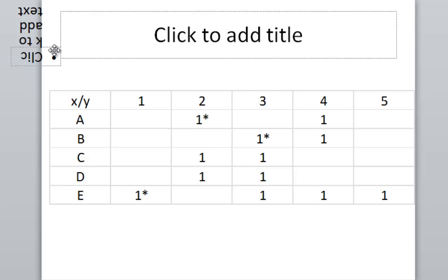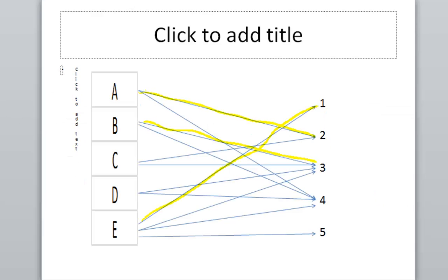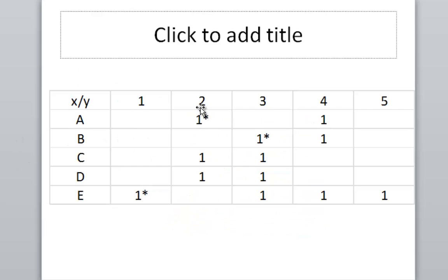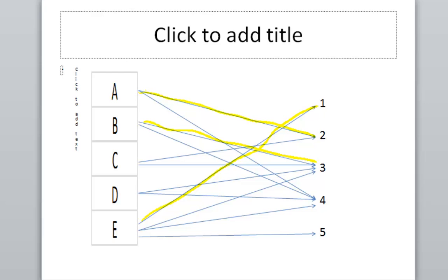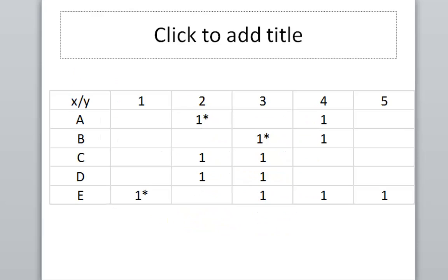As you can see here, we have a table which represents the graph I showed you up here where the ones are the edges or the connections between the numbers and the letters and the little starred ones are the matchings that your boss initially gave you, the initial matching. So A to 2, E to 1, and B to 3 are the matchings.